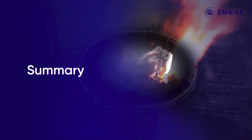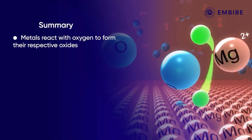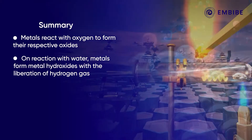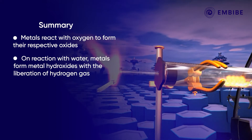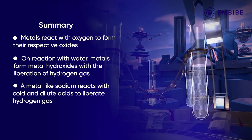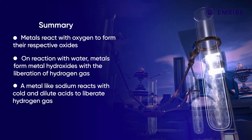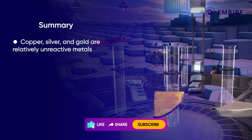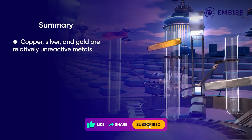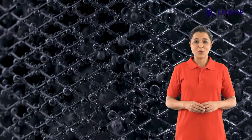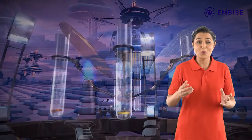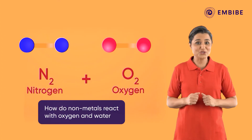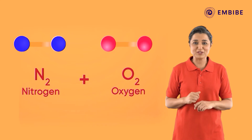To sum up, we have studied that metals react with oxygen to form their respective oxides. On reaction with water, metals form respective hydroxides with the liberation of hydrogen gas. Metals like sodium react with cold dilute acids to liberate hydrogen gas. From among the metals discussed, copper, silver and gold are relatively unreactive. But how do you think non-metals react with oxygen or water? Watch our upcoming videos to find out.